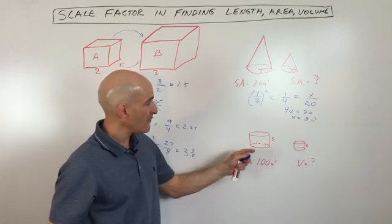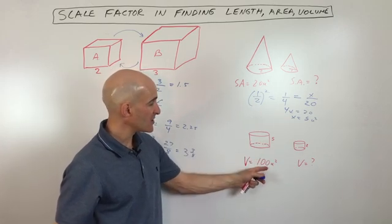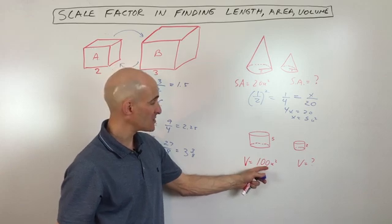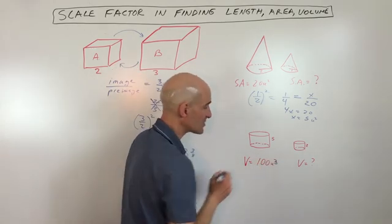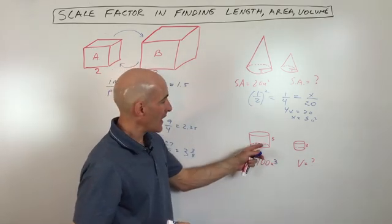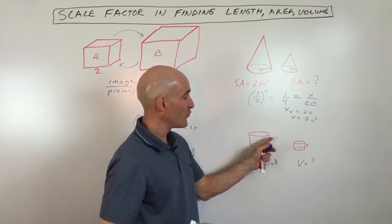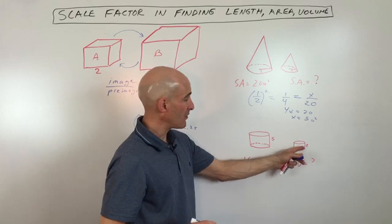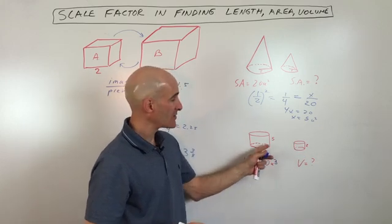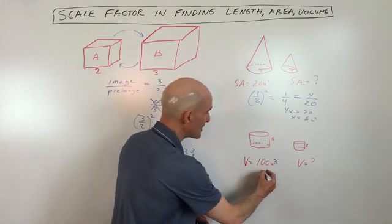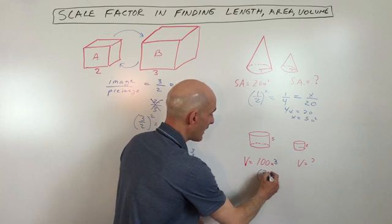We're going to compare volumes. If we're comparing the volume here, which they give us is 100 square units, actually 100 cubic units, right? Because it's three-dimensional. If we're trying to compare these two, you can see the scale factor is two-fifths. So this is going to be, the heights are two-fifths.